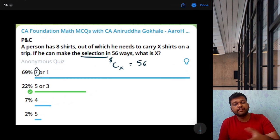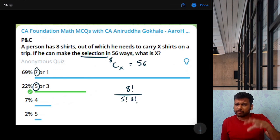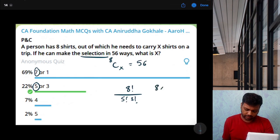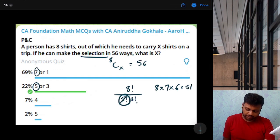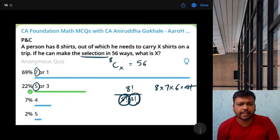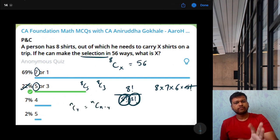So we can directly go by options. 8C7 is not 56. 8C1 is also not 56. Let's check 8C5. How do you calculate 8C5? Understand. Whenever you are calculating combinations, it will be 8 factorial upon 5 factorial into 3 factorial. Always remember, don't write it. We will start with 8 into 7 into 6 and so on. But whatever is the highest number from denominator, we will cancel that. So 8 into 7 into 6 divided by 3 factorial. That is 6. So 56 is the correct answer. This is the correct option because 8C5 will also be equal to 8C3.